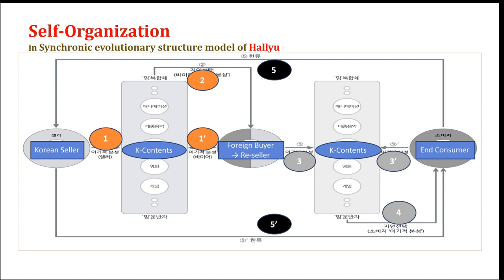The end consumer then relays the viewer's response to the reseller or Korean seller — number five. The Korean seller reflects the reactions of end consumers in the production of other K-Culture contents, or provides feedback to end consumers in another way — number five prime. The circulation that leads through numbers one, one prime, two, three, three prime, four, five, and five prime is the process of self-organization of Hallyu.